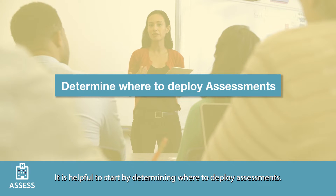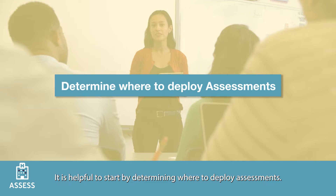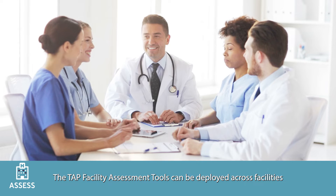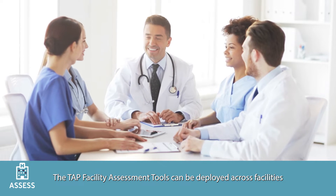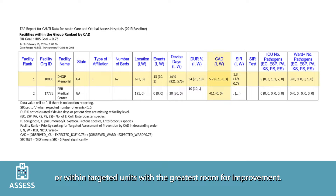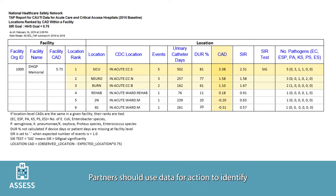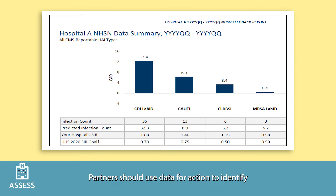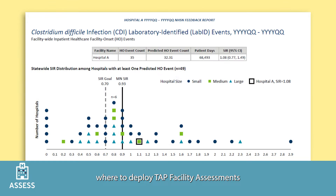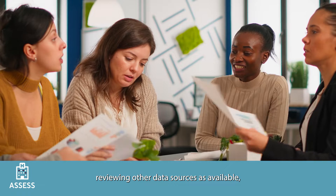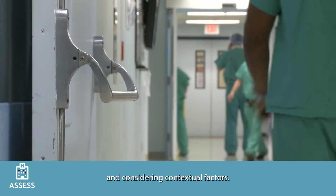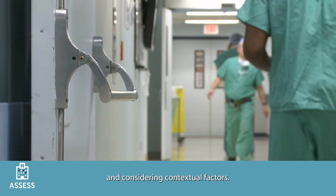It is helpful to start by determining where to deploy assessments. The TAP facility assessment tools can be deployed across facilities or within targeted units with the greatest room for improvement. Partners should use data for action to identify where to deploy TAP facility assessments by generating TAP reports in NHSN, reviewing other data sources as available, and considering contextual factors.